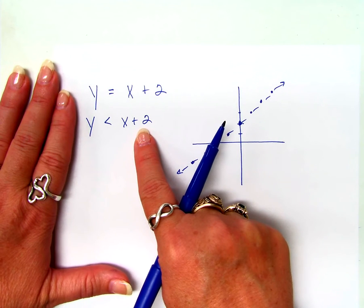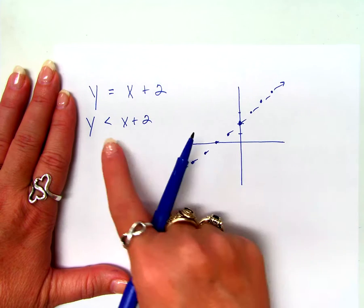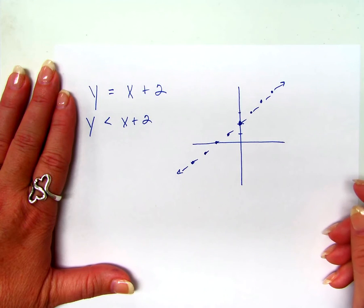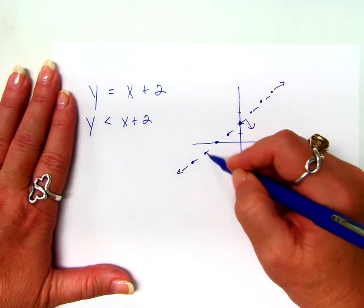Okay. And so now we have to what? Shade. So it's less than, so where would we shade? Below.